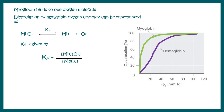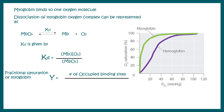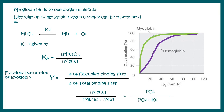The Kd is expressed as: Kd = [Mb][O₂] / [MbO₂]. We can define a parameter called fractional saturation — the total number of occupied binding sites divided by total available binding sites — which equals MbO₂ divided by bound plus unbound myoglobin. Converting this expression in terms of partial pressure and plugging in Kd gives: θ = pO₂ / (pO₂ + Kd). Plotting fractional saturation versus partial pressure of oxygen yields the characteristic hyperbolic curve.